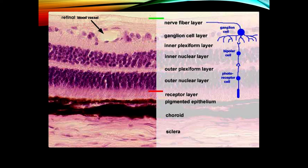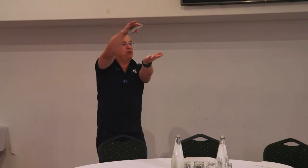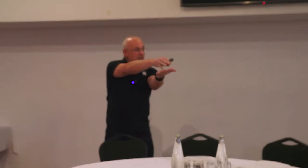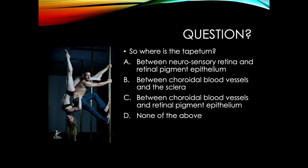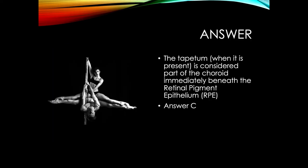Pretty much all species except primates have a tapetum. Talking about layers — the neurosensory retina, the potential space, the retinal pigment epithelium, the choroid with its blood vessels, and the sclera — where does the tapetum sit? It sits in between the retina and the choroidal blood vessels. Beneath the RPE, it is classed as part of the choroid.